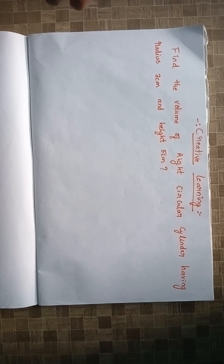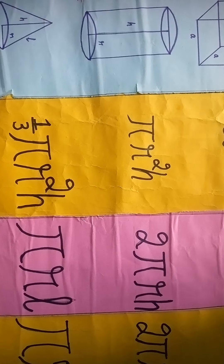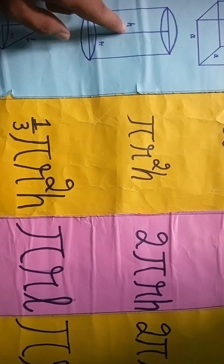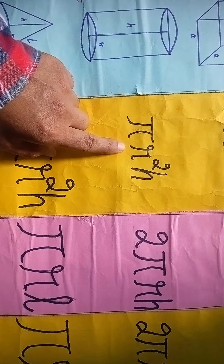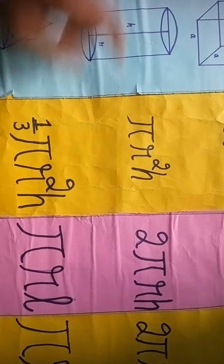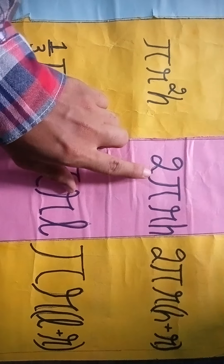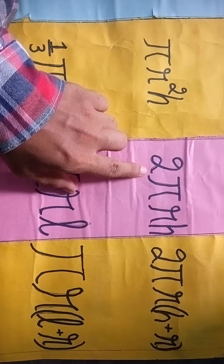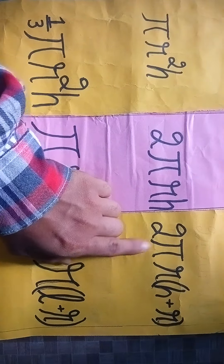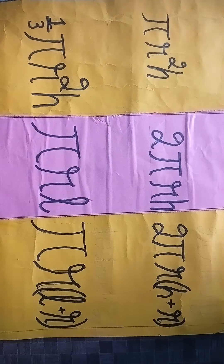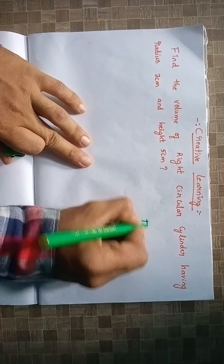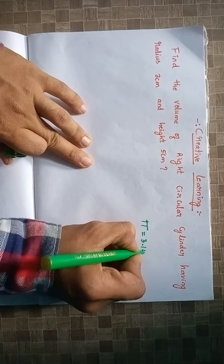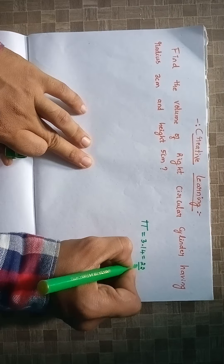Let's see the chart to choose the formula. Here is the figure of a right circular cylinder. The volume of a right circular cylinder is π r² h. The curved surface area is 2πrh, and the total surface area is 2πr(h + r). Remember, the value of π is 3.14 or 22/7.